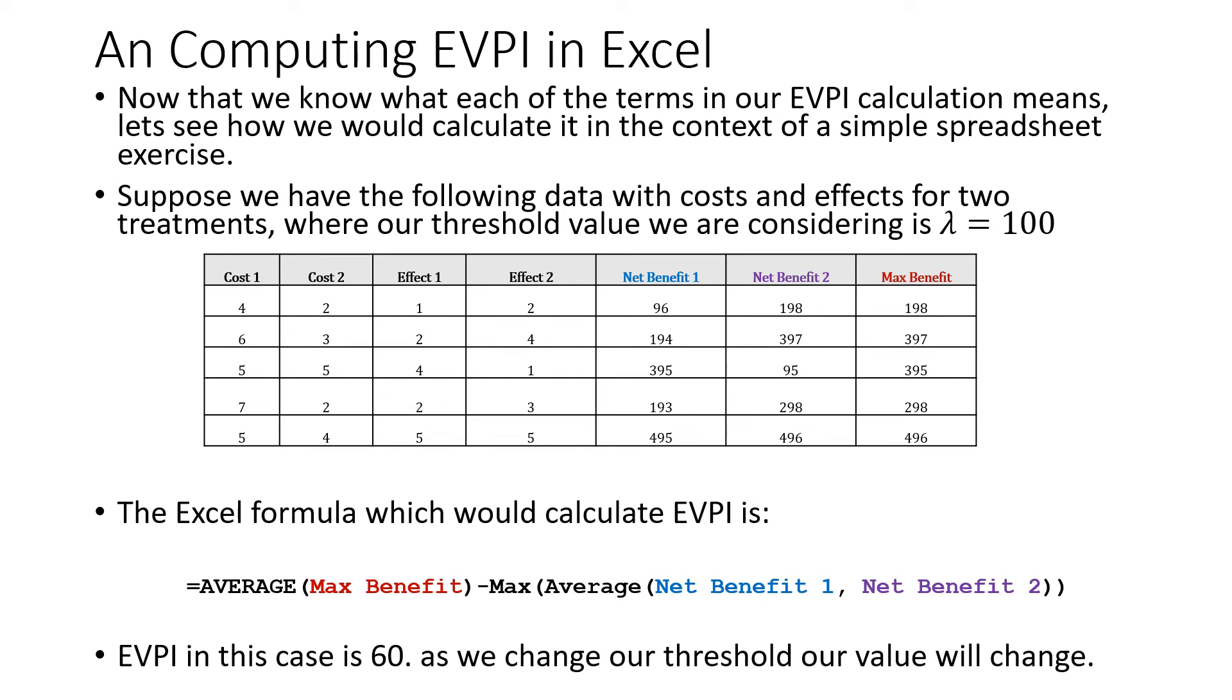Now that we know what each of our terms in our expected value of perfect information calculation means, let's see how we would calculate it in a simple spreadsheet exercise. Suppose we have the following data on costs and effects for two treatments, where our threshold value we're considering is lambda equals 100. We compute each of these net benefits by putting lambda times effect minus cost here. We get each of these net benefit equations, and we have this maximum net benefit row where we choose the one with the highest value.